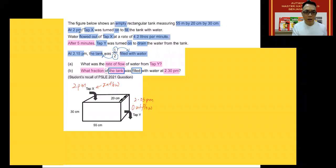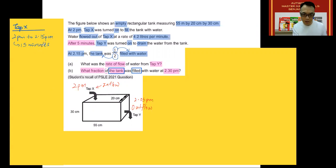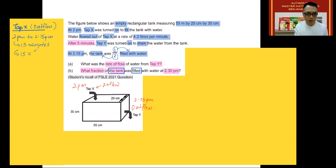The question says that at 2 p.m., Tab X was turned on, so water will start flowing into the tank at 2 p.m. For Tab X, from 2 p.m. to 2:15 p.m. — which is the time that we are interested in — how much time has passed? When taking exams, it is necessary to write information like this to show where you get the numbers from, in this case 15. Since water is flowing out of Tab X at 4.2 liters per minute, then in 15 minutes it will be 15 times 4.2 liters.